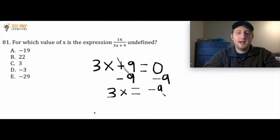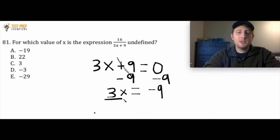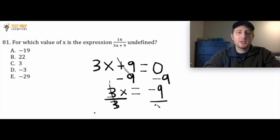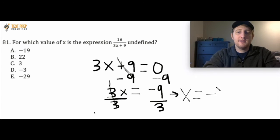It's negative 9 because I had to do 0 minus 9. So I have 3x — that's really 3 times x — and the opposite of times is division. If I divide by 3, the 3s are going to cancel out and I'll have x by itself on the left-hand side. Whatever you do to one side, you always have to do to the other as well, so I'm going to divide negative 9 by 3. That gives us x equals negative 3.